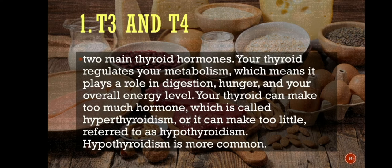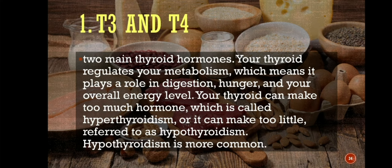Number 1: T3 and T4 are the two thyroid hormones produced in your thyroid. Your thyroid regulates your metabolism, which means it plays a role in digestion, hunger, and your overall energy level. Your thyroid can make too much hormone, called hyperthyroidism, or too little, referred to as hypothyroidism. Hypothyroidism is more common than hyperthyroidism.